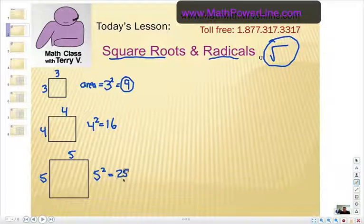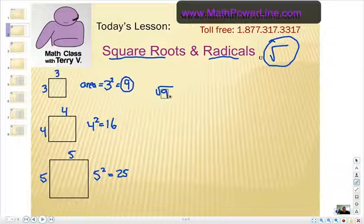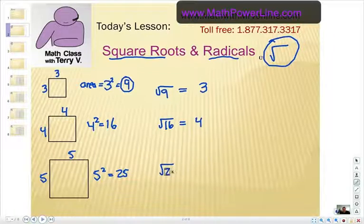Now if we go in reverse, square root of nine. Think about, again, a square. If the area is nine, what are the sides of the square? So you're going backwards. It's an opposite operation. Taking the square root means that each side would be a length of three. And the square root of 16 would be four, because four times four is 16. And the square root of 25 is five.